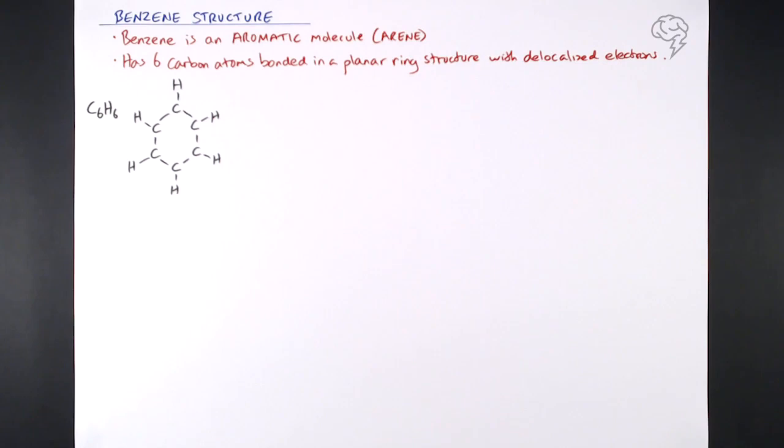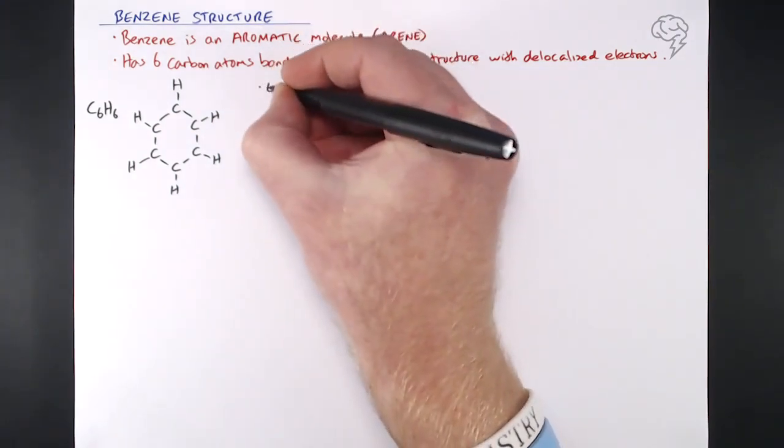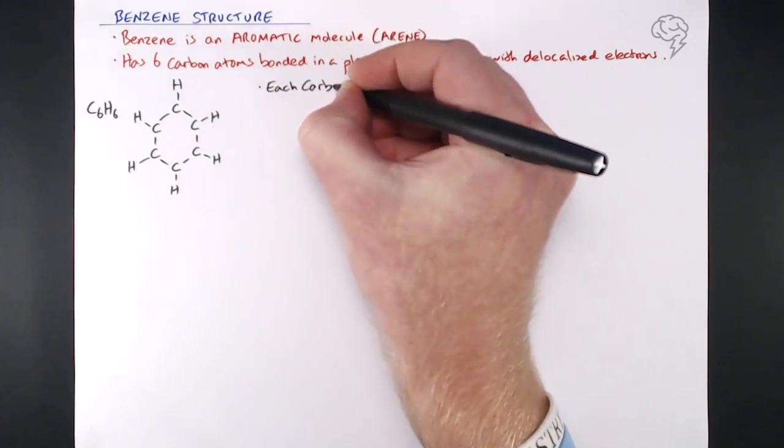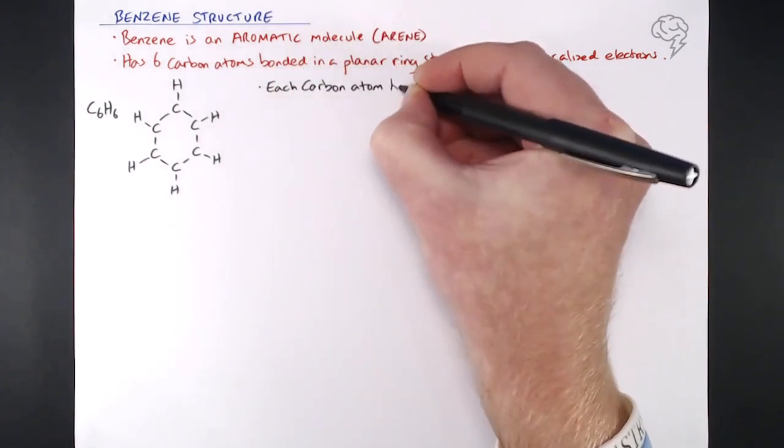Now you will notice that traditionally we've got four bonds around each carbon. This is different, there are only three, but specifically this is what the bonding is. So each carbon atom has three sigma bonds, sigma bonds really specifically.